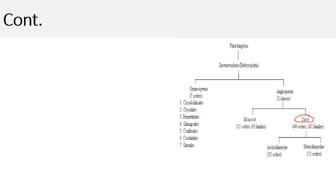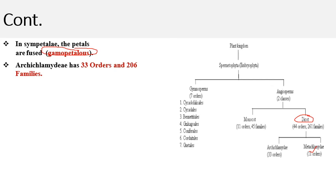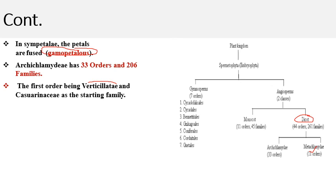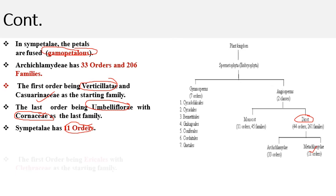In Metachlamydeae (Sympetalae), the petals are fused — the gamopetalous condition prevails. Archichlamydeae contains 33 orders and approximately 206 families. The first order is Verticillatae, with Casuarinaceae as the starting family, while the last order is Umbelliflorae, with Cornaceae as the last family in this Archichlamydeae group. In Sympetalae there are 11 orders.